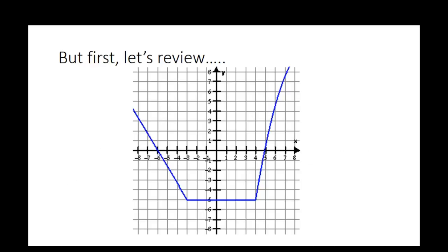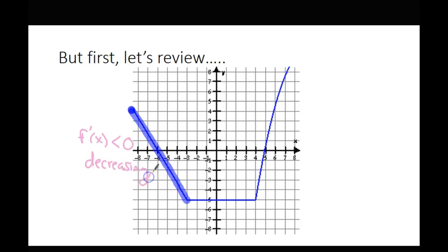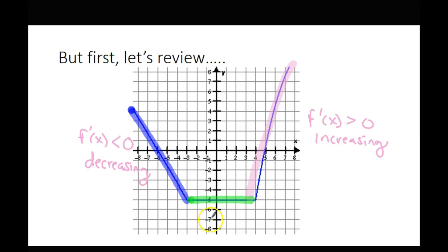You do this by looking at the slopes. Let's review some basic slope facts. If the graph is decreasing, f prime of x is less than zero — negative slope. If the graph is increasing, f prime of x is greater than zero — positive slope. And if it's constant, f prime of x equals zero.